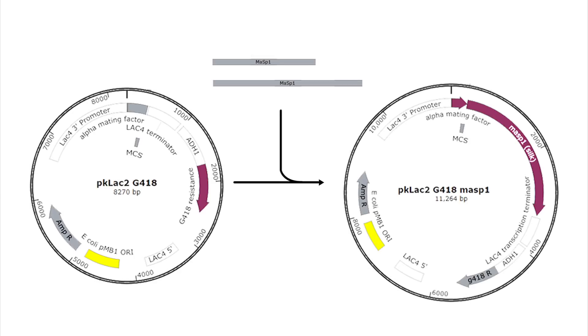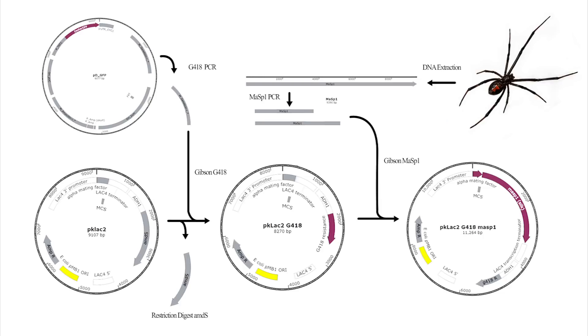Once that's done, we can add our spider silk sequence, and then all that's left to do is put our new DNA into the yeast. Here's a roadmap to show the couple of steps we'll be taking to do all of that, so now let's break it down step by step.